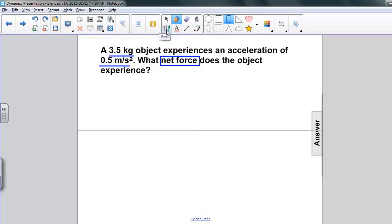So let's do that. First thing is, let's write down each of the quantities that we're given. We have mass is equal to 3.5 kilograms. We have acceleration equals 0.5 meters per second squared.